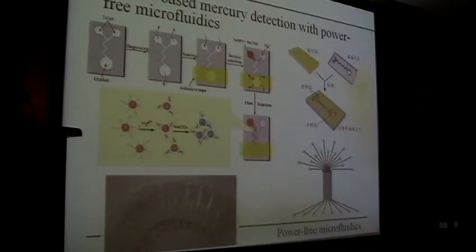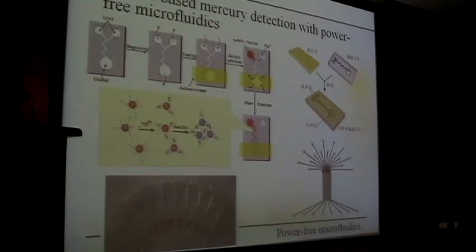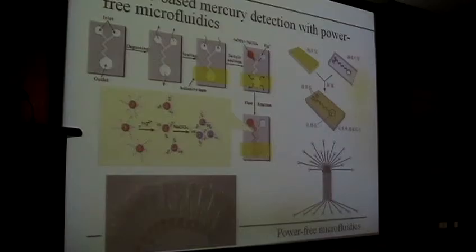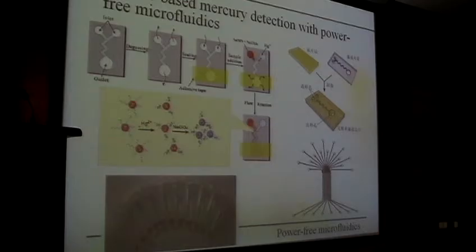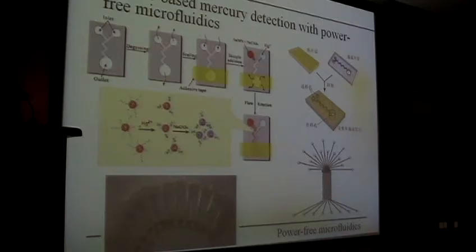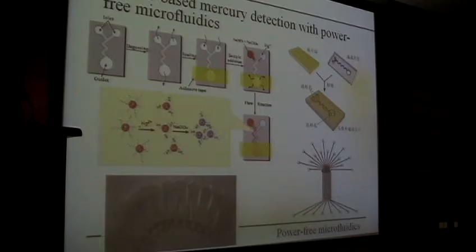We wanted to further improve the method. If we go to a river and want to know if there is mercury present, we want a portable device. We can take a drop of water from the river, put it into the device, and hopefully see a color change. We tried to make such devices using microfluidics, but usually microfluidics require pumps — the device itself is small but the pump is not. With a new design, we can do so-called pump-free microfluidics using a very small PDMS chip with no pump needed.